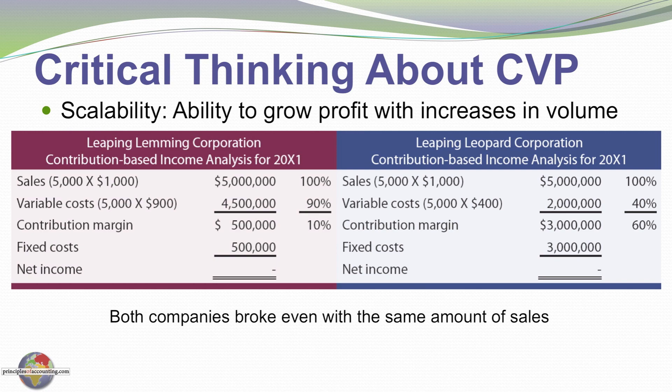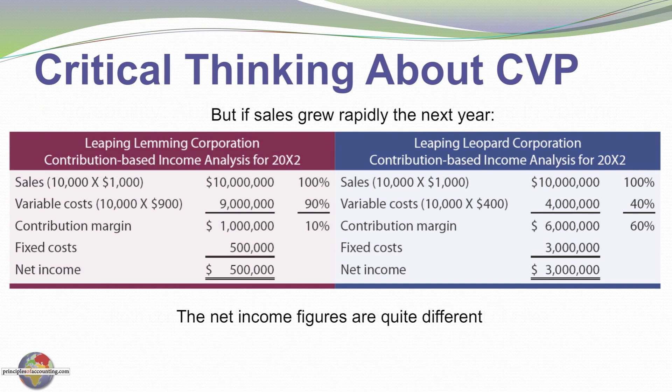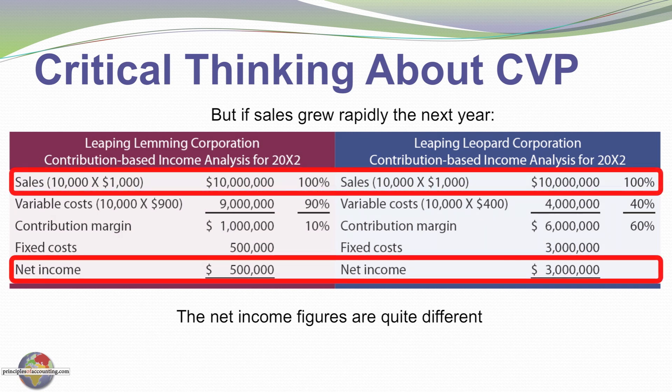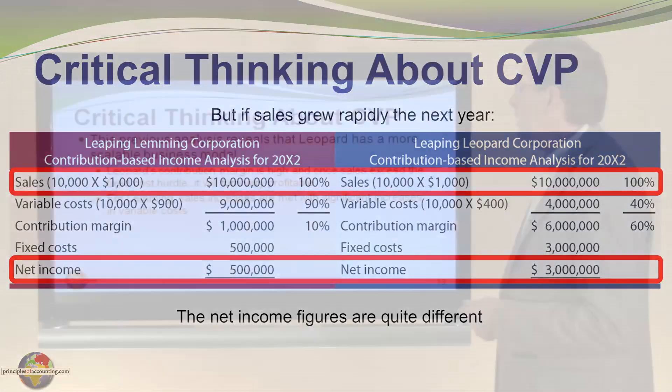So both companies broke even at this level of sales, but what if we look at a revised example where sales are now 10,000 units? Sales are now ten million dollars for each, and look at the distinct differences in profitability — on the left we see a $500,000 profit, but on the right we see a three million dollar profit.